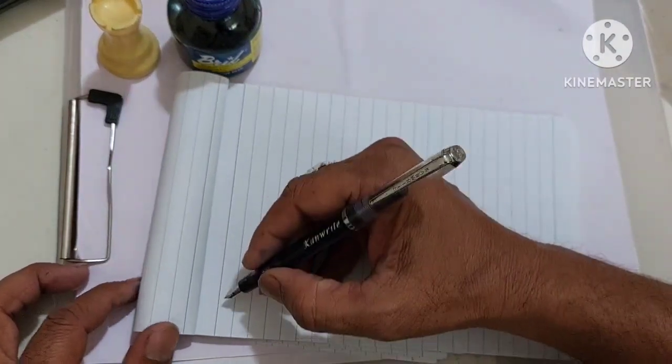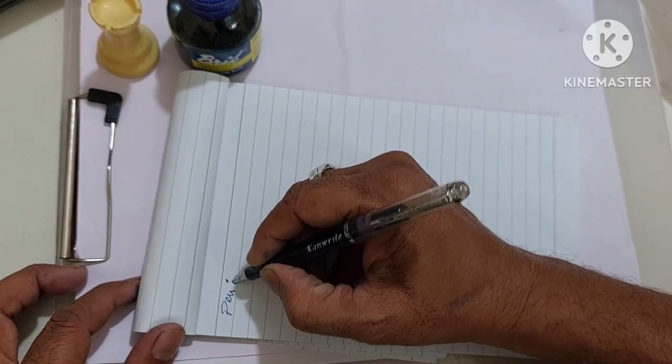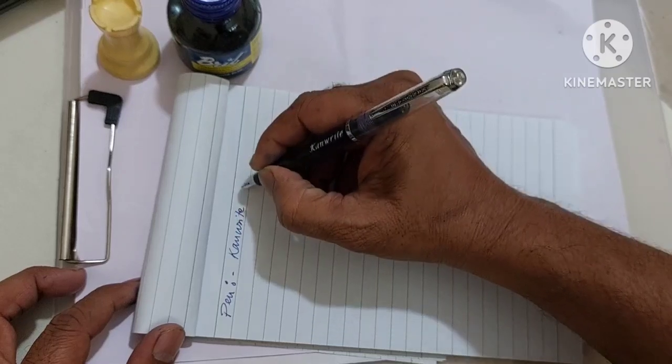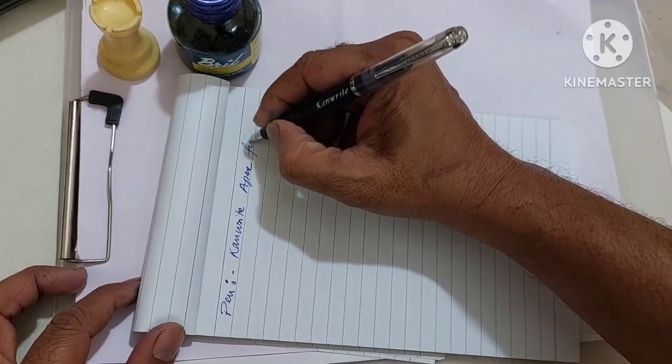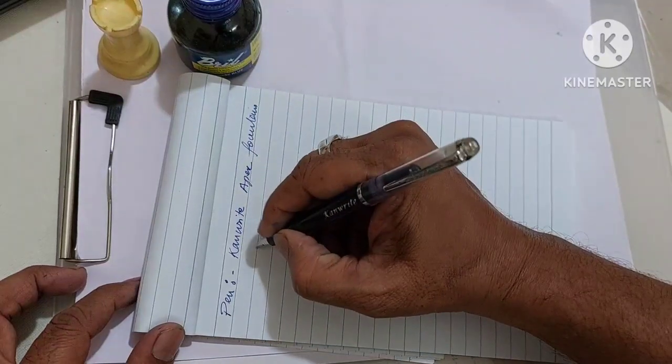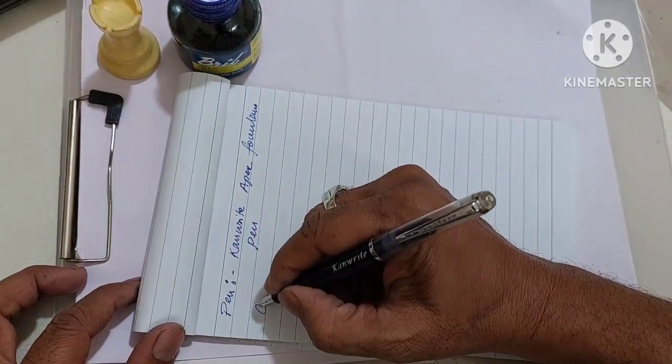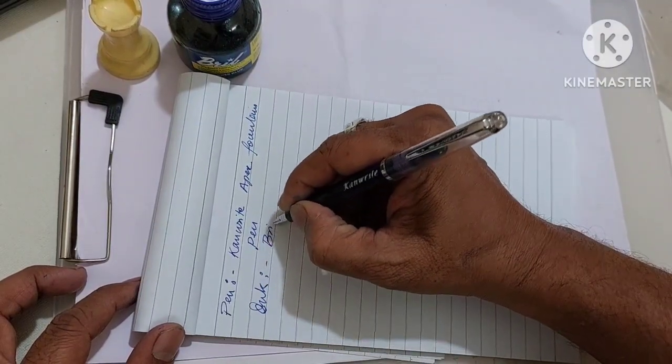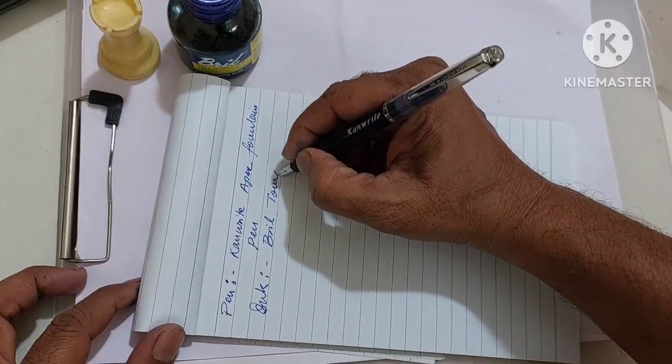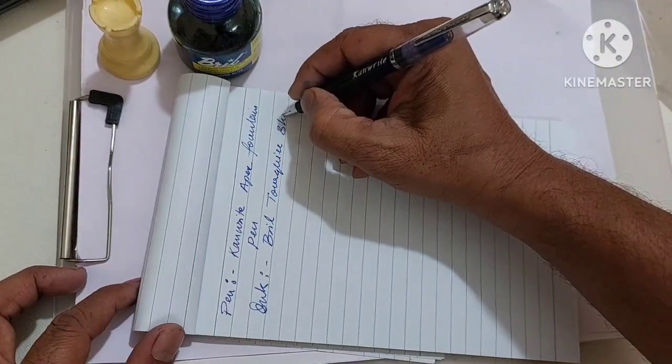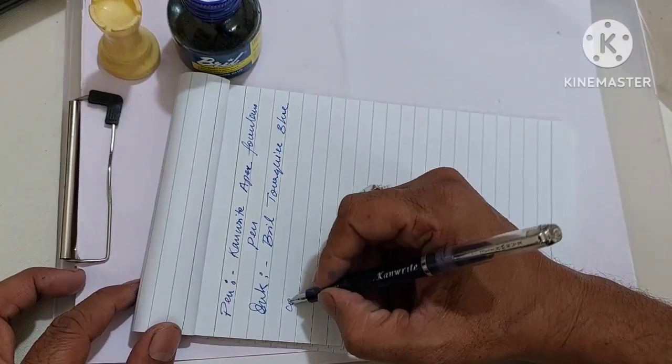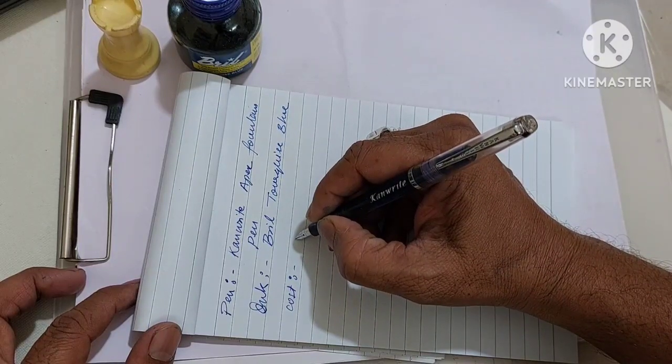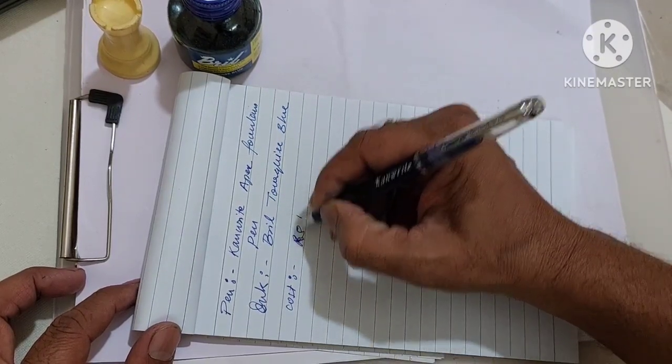Here we have, so the pen for today is CanWrite Apex fountain pen. Ink I am using today is Brill Turquoise blue color.